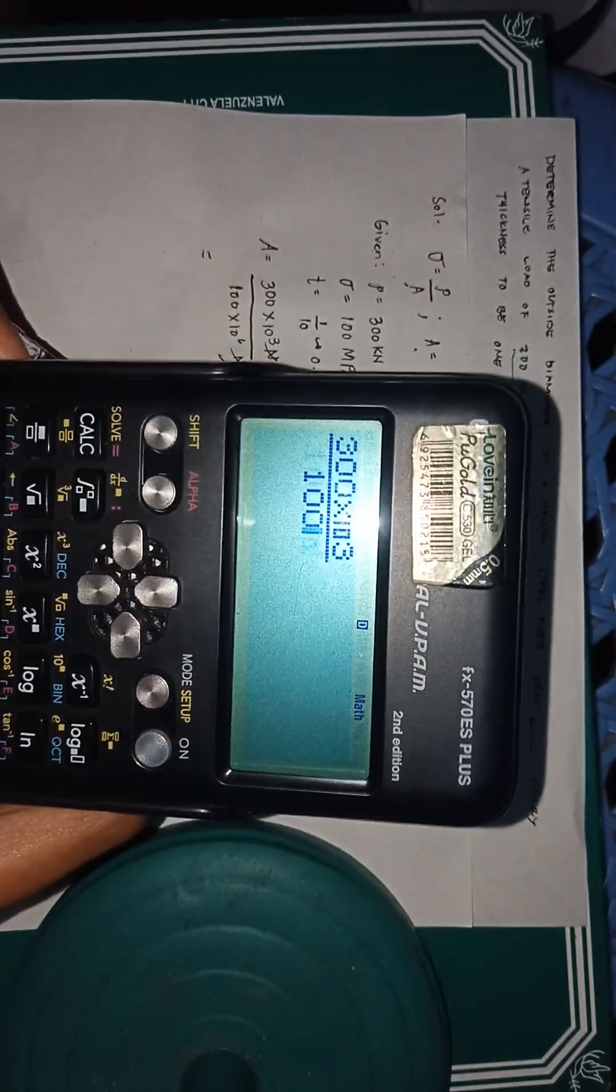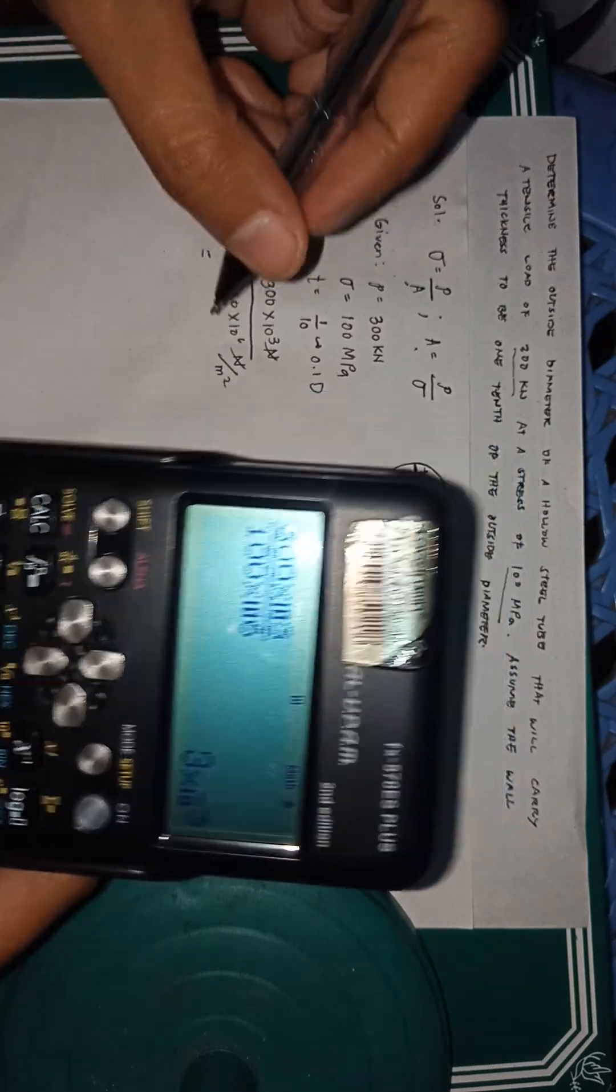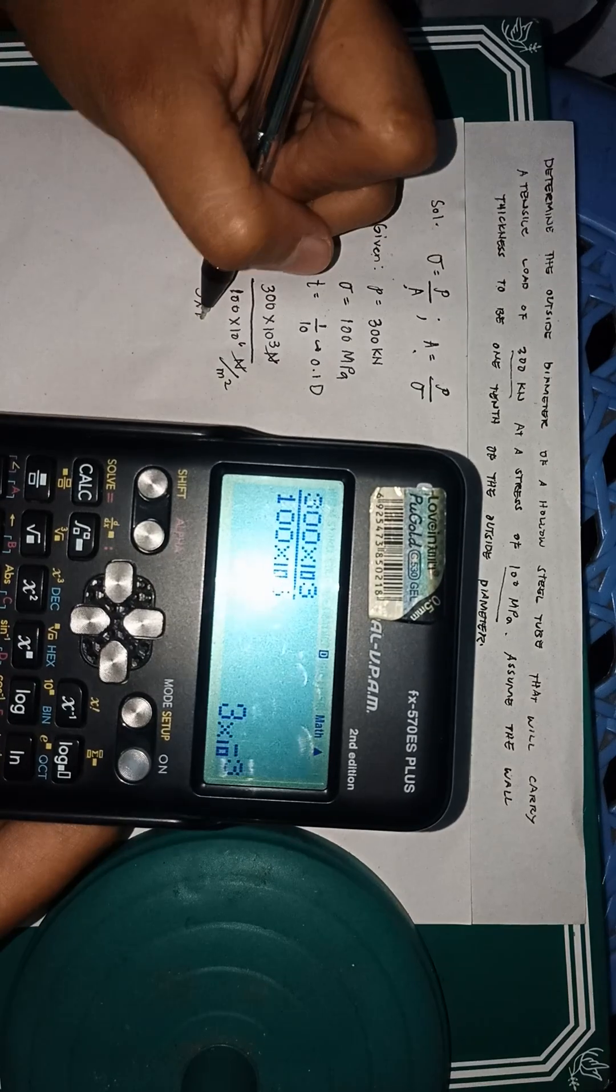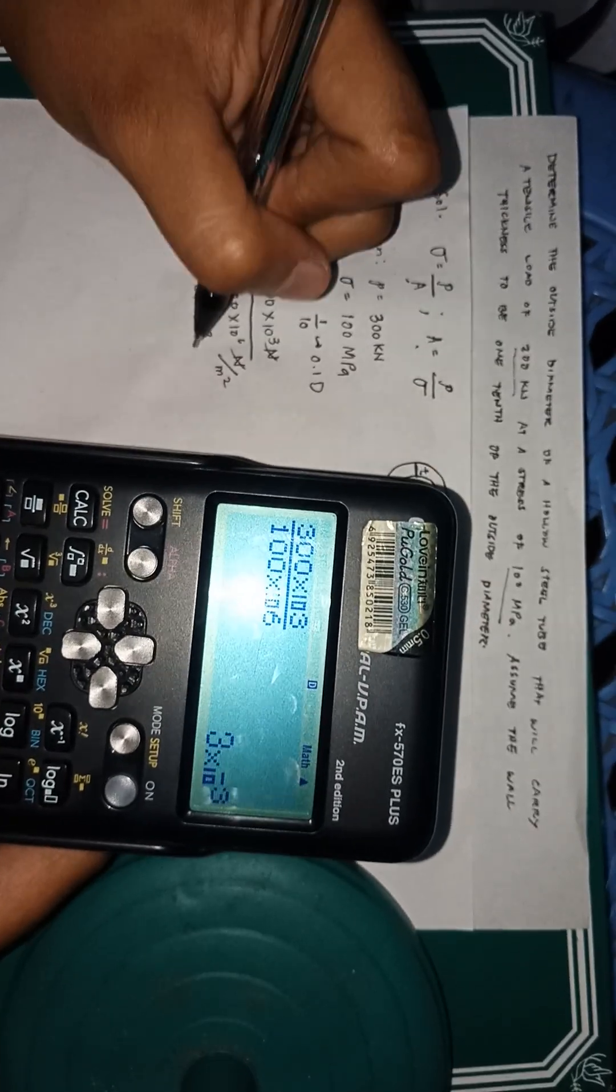That's 3 times 10 to the power of negative 3 meter squared. That's our area.